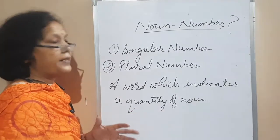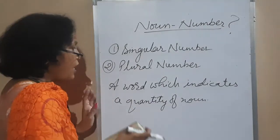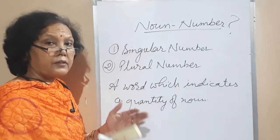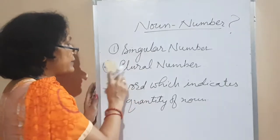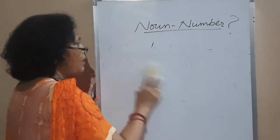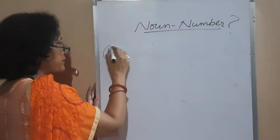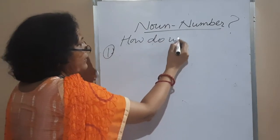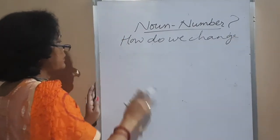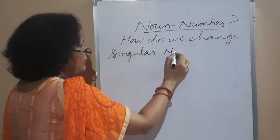The plural number means two, three, or many persons, places, animals, or things. It refers to nouns only. Now the question is: how do we change the singular number into plural number? There are two or three rules.